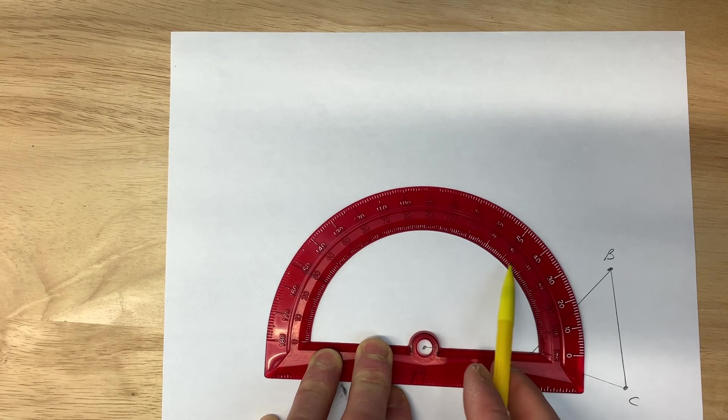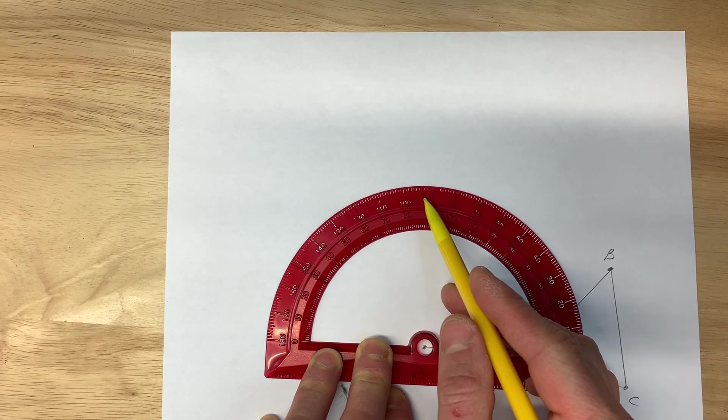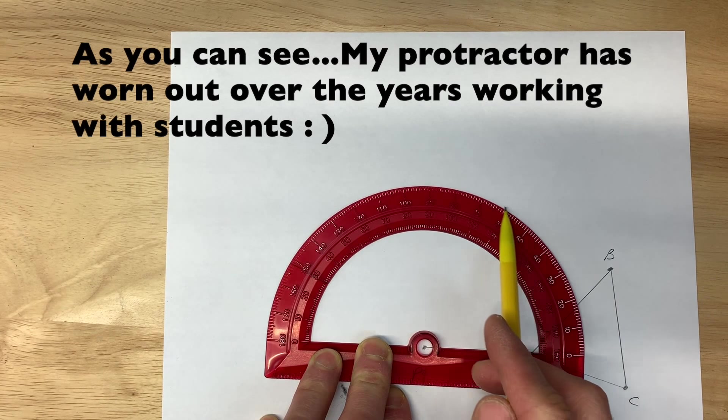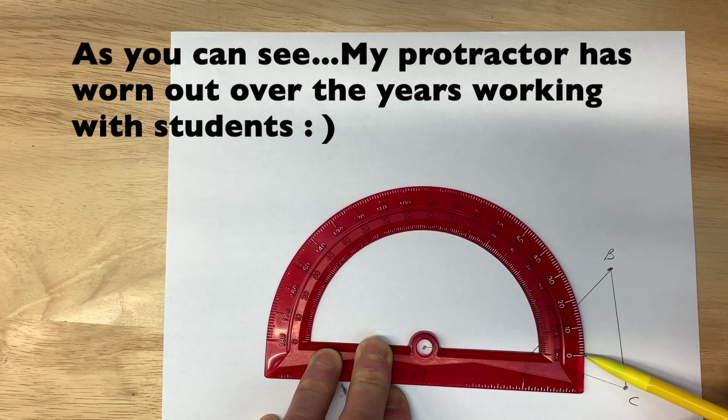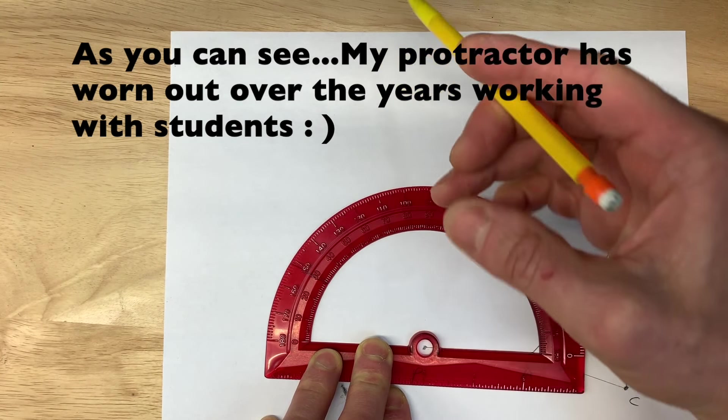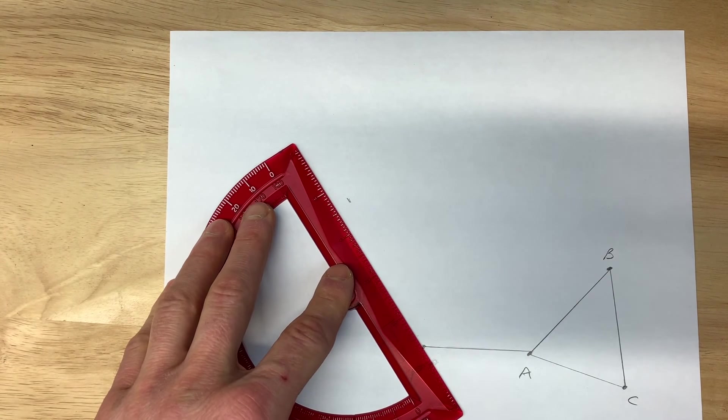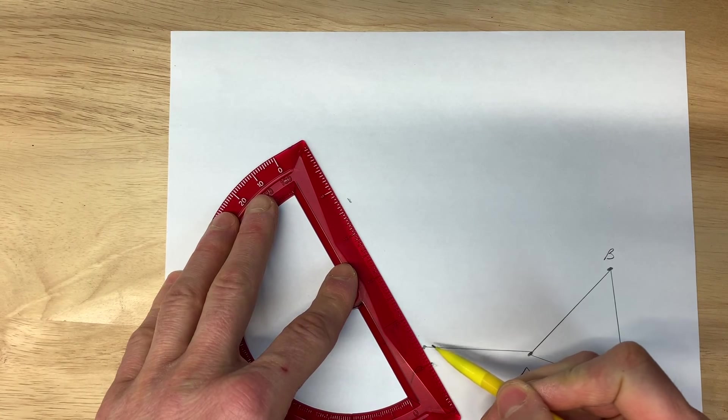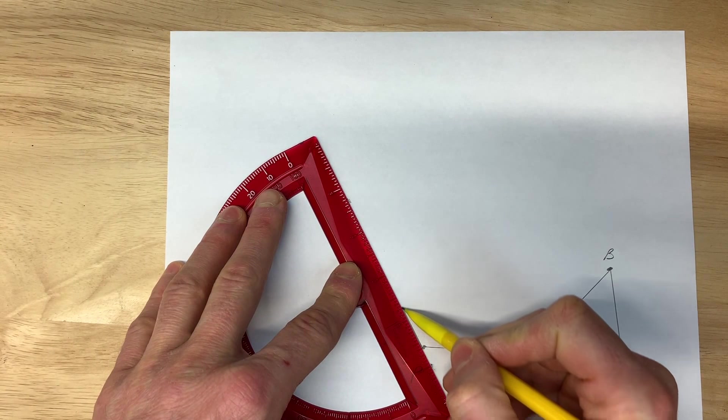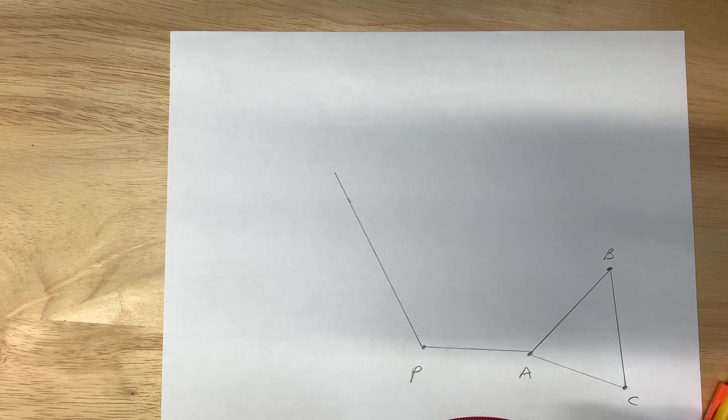Now we want to make sure we use the right numbers. You can see there's a set of numbers on the inside of the protractor and numbers on the outside. We're rotating counterclockwise so we're going to start over here with the numbers on the outside - 0 degrees, 10 degrees, 20 degrees, until we get to 120 degrees. I'm going to put a mark and draw a line through the point of the center of rotation point P to that 120 degree mark.